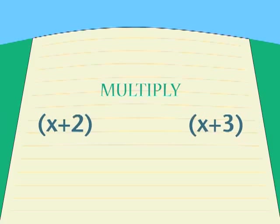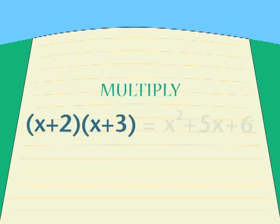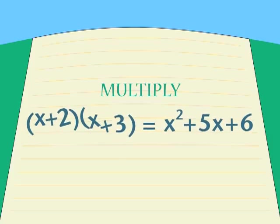In the module on binomials, we saw how to multiply two expressions together and come up with an answer like this. Here's a question. When you have an equation with that equal sign in the middle, you can read it in either direction. Both sides say the same thing.